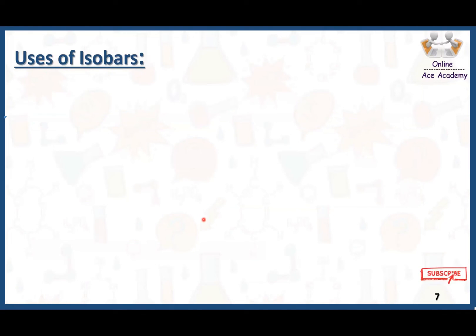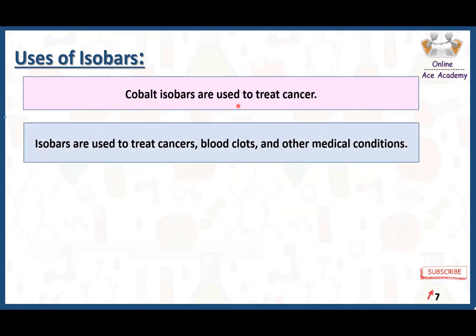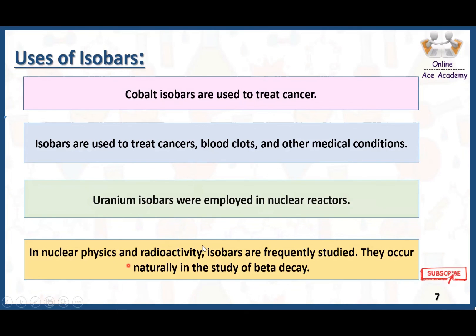Isobars are very important in different fields of chemistry, especially in medicine. Cobalt isobars are used to treat cancer. Isobars are also used to treat blood clots and different medical conditions — for example, isotopes of iodine are used to treat goiter. Uranium isobars are employed in nuclear reactors for different nuclear reactions. In nuclear physics and radioactivity, isobars are frequently studied, and they occur naturally in the study of beta decay.